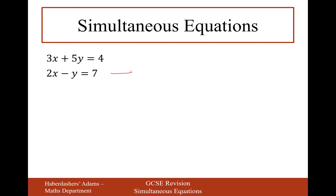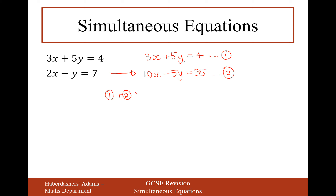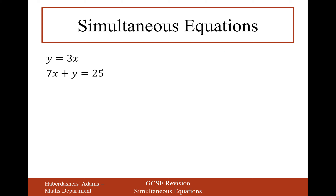Pause and give the next one a go. Times the bottom by 5: 10x minus 5y equals 35. Leave the top: 3x plus 5y equals 4. One positive 5y, one negative — add them. 3x plus 10x is 13x; y's cancel; 4 plus 35 is 39. Divide by 13: x equals 3. Substitute into the second original: 2 times 3 is 6, minus y equals 7; y equals minus 1. Answer: x equals 3, y equals minus 1.